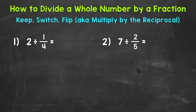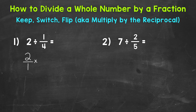We always keep the first number or fraction. In the case of number one, we have a whole two, so we keep that as two but rewrite it as a fraction by putting it over one — this gives us a numerator and a denominator. Then we switch from division to multiplication. And since we switched to the inverse of division, we flip the second fraction: the denominator becomes the numerator and the numerator becomes the denominator, so we get four over one.